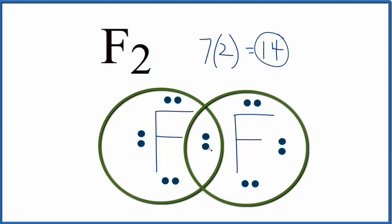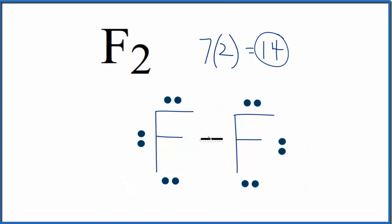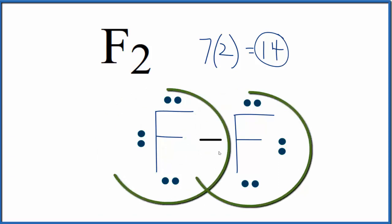Sometimes you'll see this pair of electrons, this chemical bond here, replaced with a line. The line represents a shared pair of bonding electrons between the two fluorine atoms.